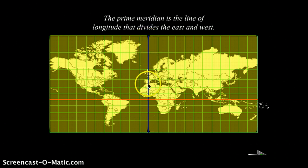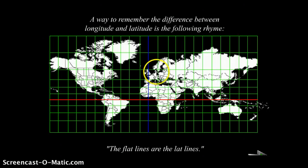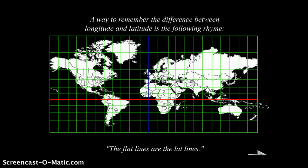This is longitude. When I think of longitude, I think of long. And this is latitude, the equator. When you think of the equator, think of 'lat' as in flat. They're lines that are flat, and longitude are long. So lat, flat, longitude, long lines. A way to remember the difference between longitude and latitude is the following rhyme: the flat lines are the lat lines.